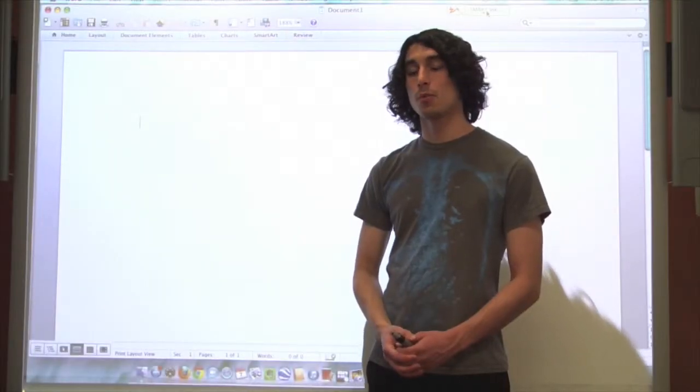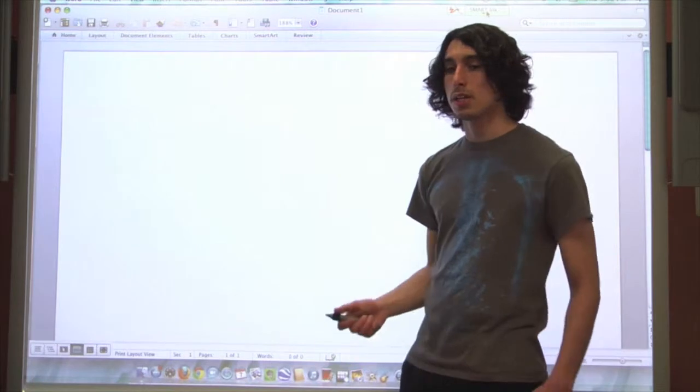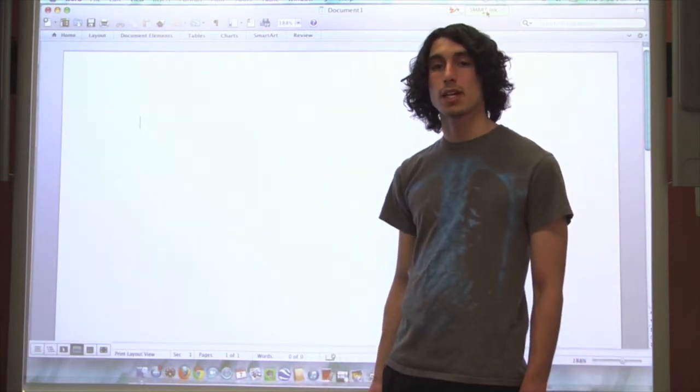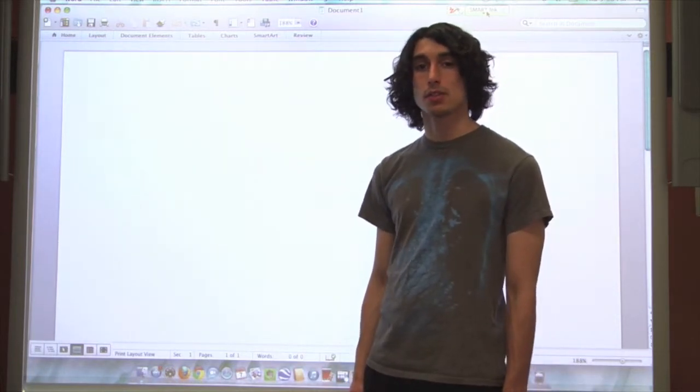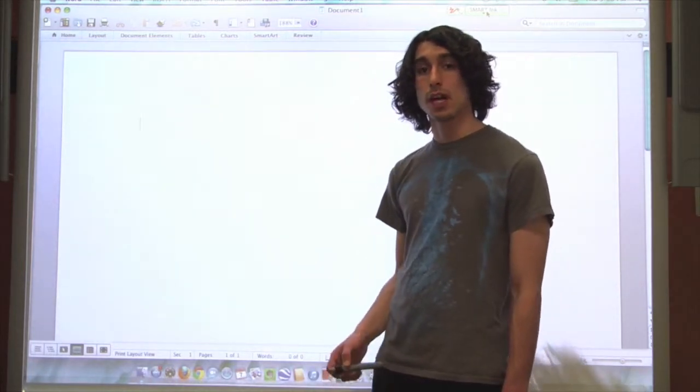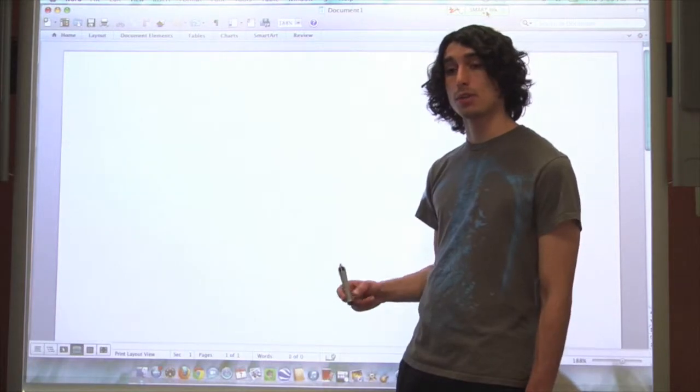Today I'll be going over question 1 from the week 9 worksheet. This question asks you to consider the titration of acetic acid with sodium hydroxide. Acetic acid is a weak acid and sodium hydroxide is a strong base. So essentially we're titrating a weak acid with a strong base.